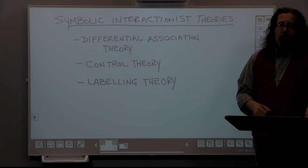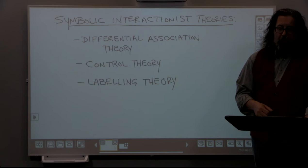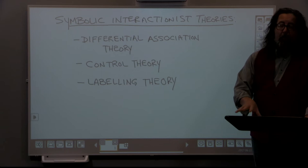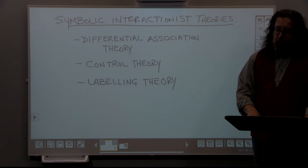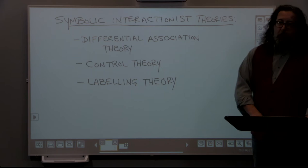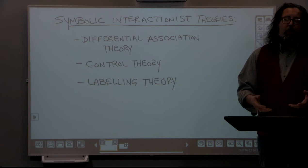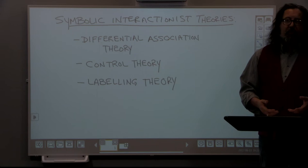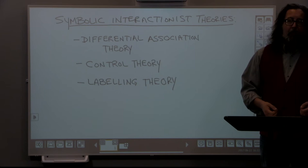Where do human beings gain self-control? According to control theorists, we gain self-control as a product of our socialization. One of the things control theorists would say is that we gain self-control through all the attachments, commitments, involvements, and beliefs we gain from being properly socialized in society. If you look at all those agents of socialization — family, school, friends, religion — one of the goals of each of those agents is to teach us right from wrong, or at least what the rules of society are. If we understand the rules of society and how we interact with other people, we'll have inner and outer controls, which results in a high measure of self-control.